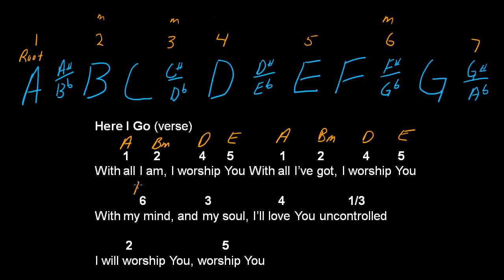Six is a six chord — and what type of chord is a six? Minor. Two, three, and six are minor, so six is F sharp minor. Three is — one, two, three — C sharp or D flat? C sharp. But a three chord is a minor, so it's C sharp minor. Four is a major, it's a D.